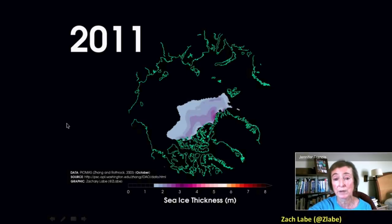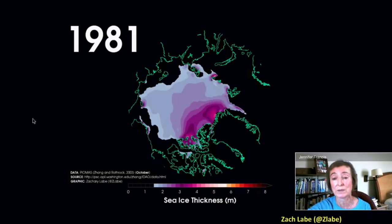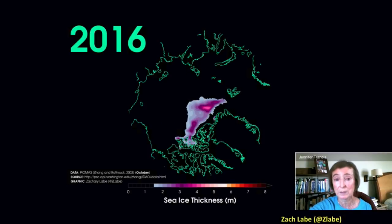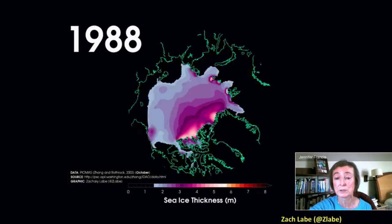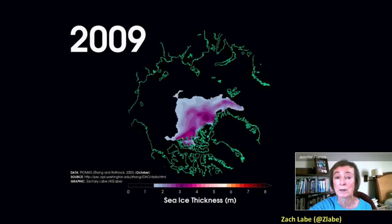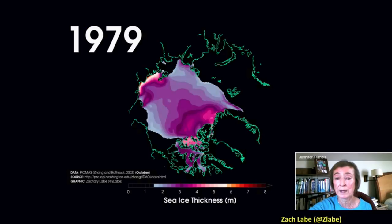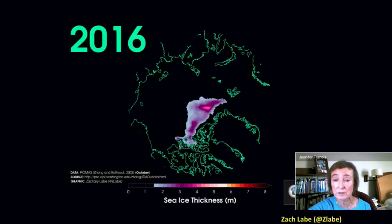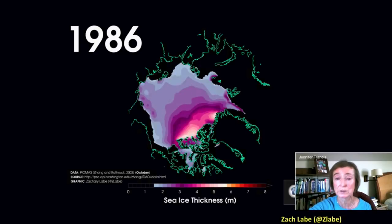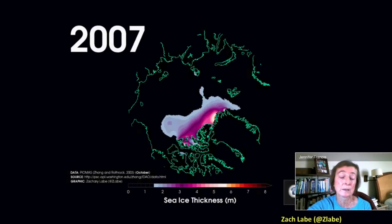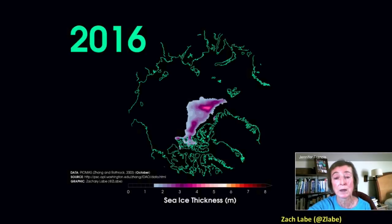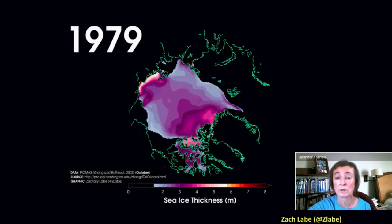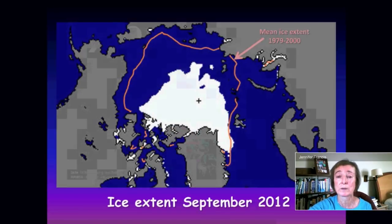Not only has the ice disappeared in terms of extent and volume, but this animation shows how the thickness of the ice has changed as well — going back to the early 1980s up to 2016. The color scale shows how over this very short time period the thickness of that ice has really disappeared, gotten very thin. This is a concern because thin ice is much more vulnerable to any shifts in winds or shifts in ocean currents. If we get an unusual weather pattern up in the Arctic, it can blow a lot more of that ice right out of the Arctic into the North Atlantic — it's a much more vulnerable ice cover now than it used to be.